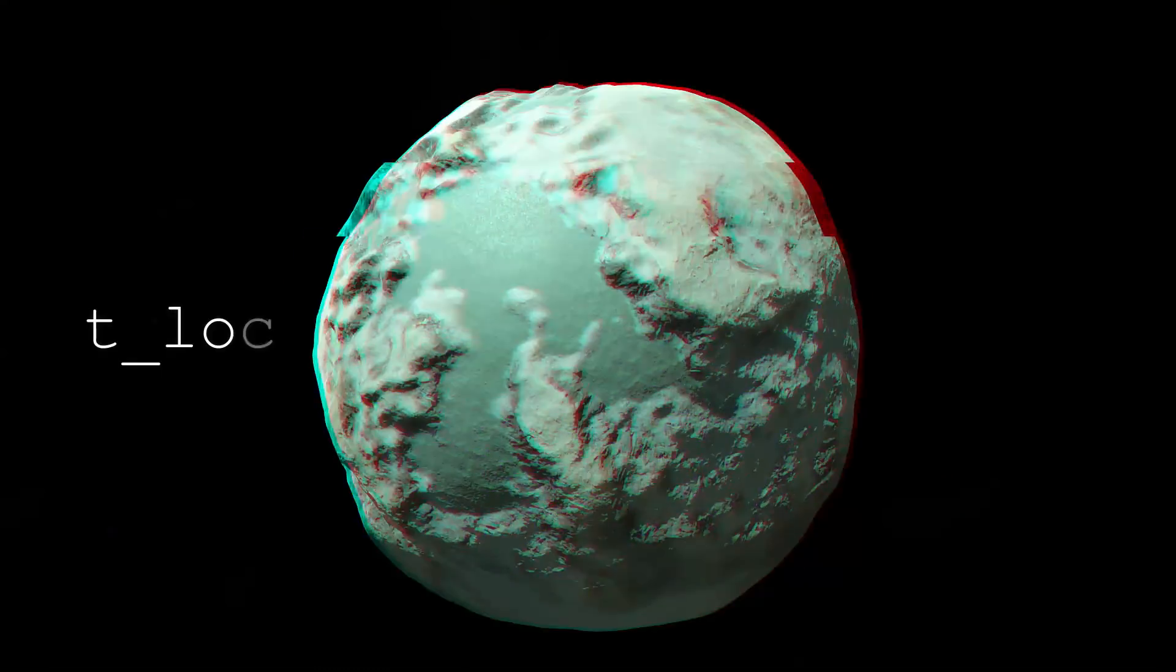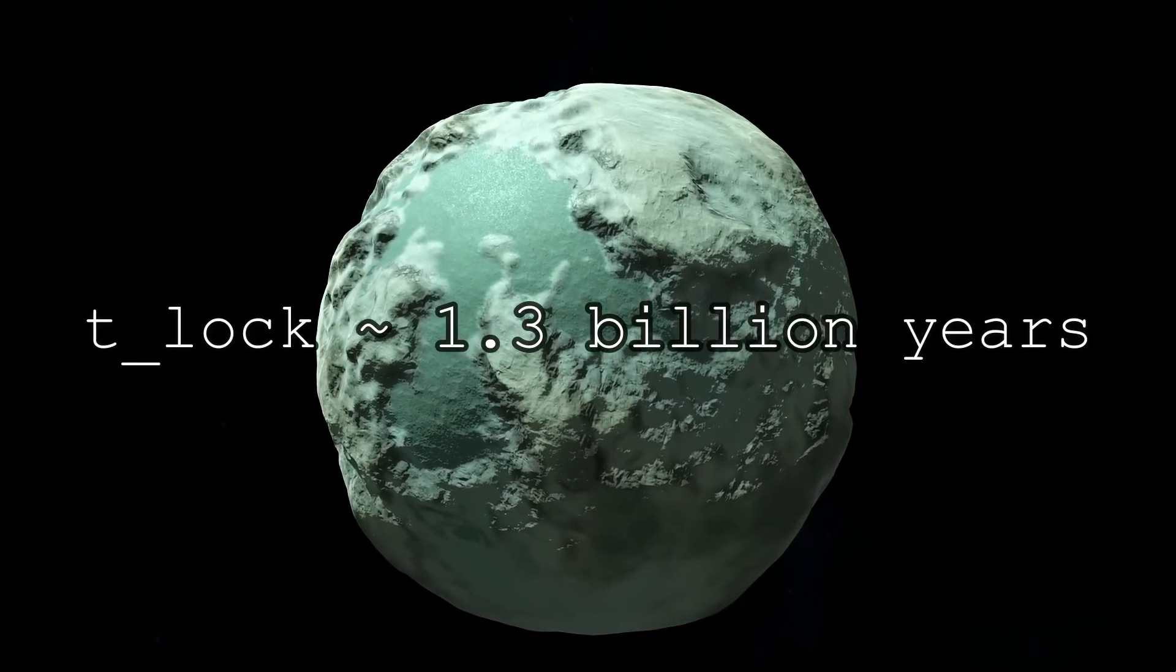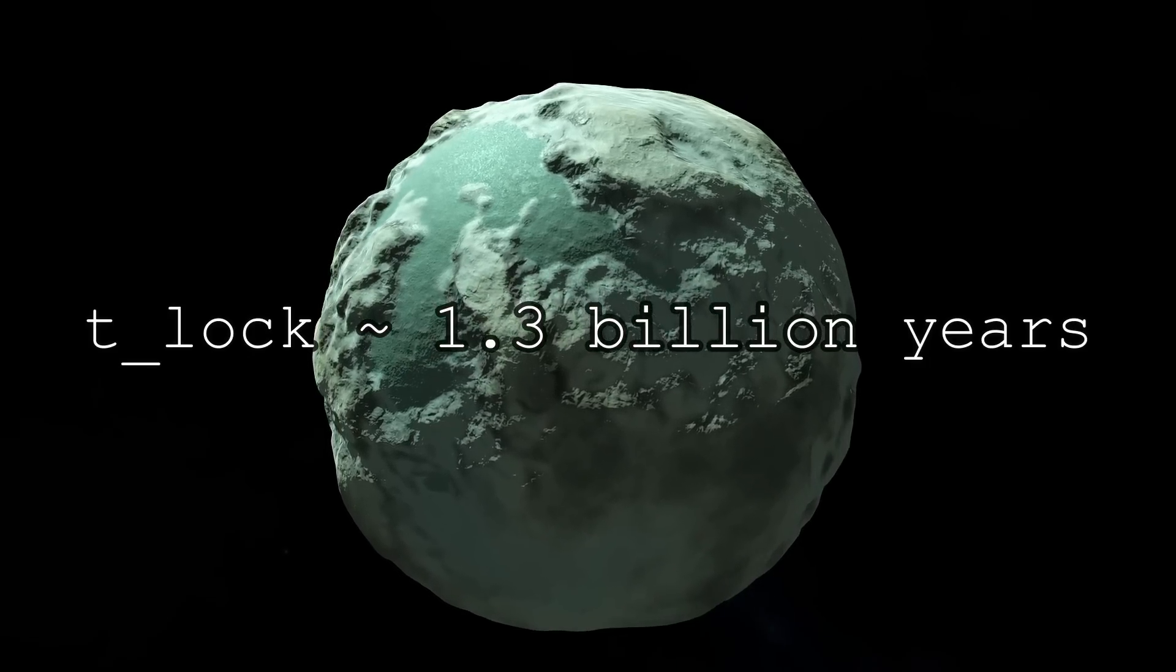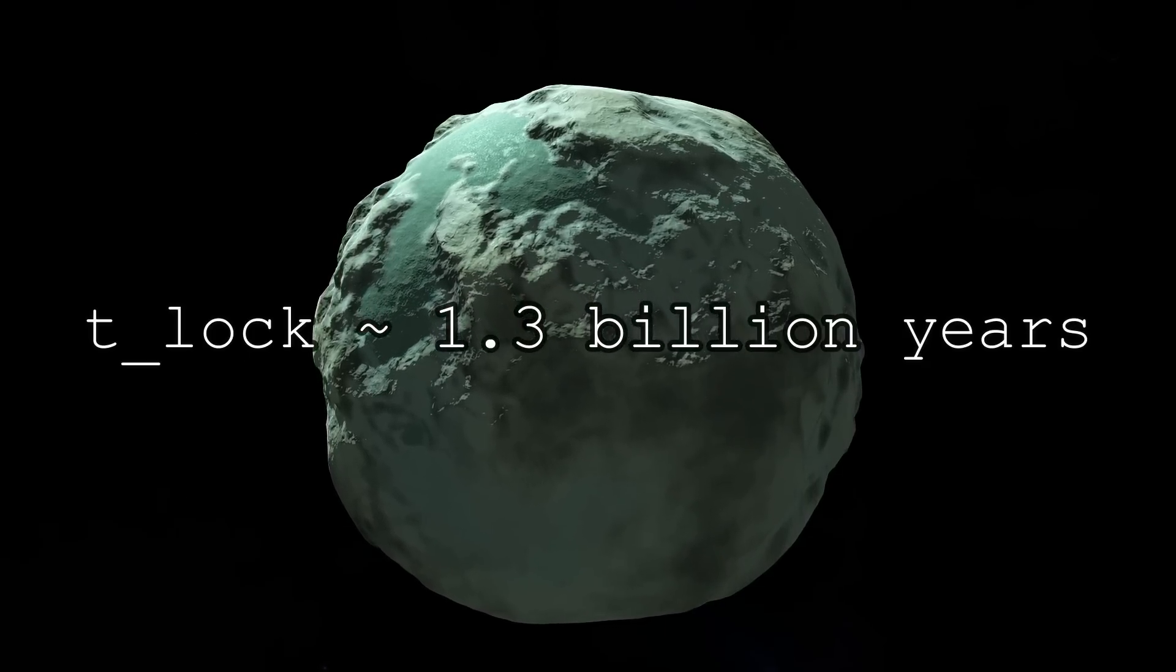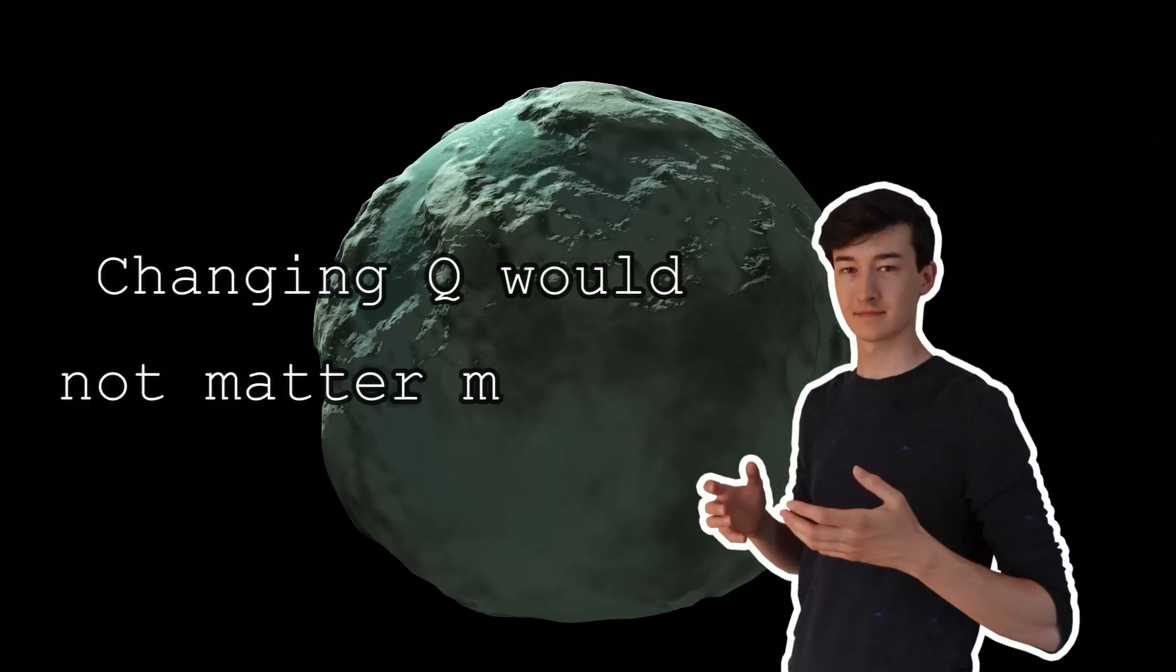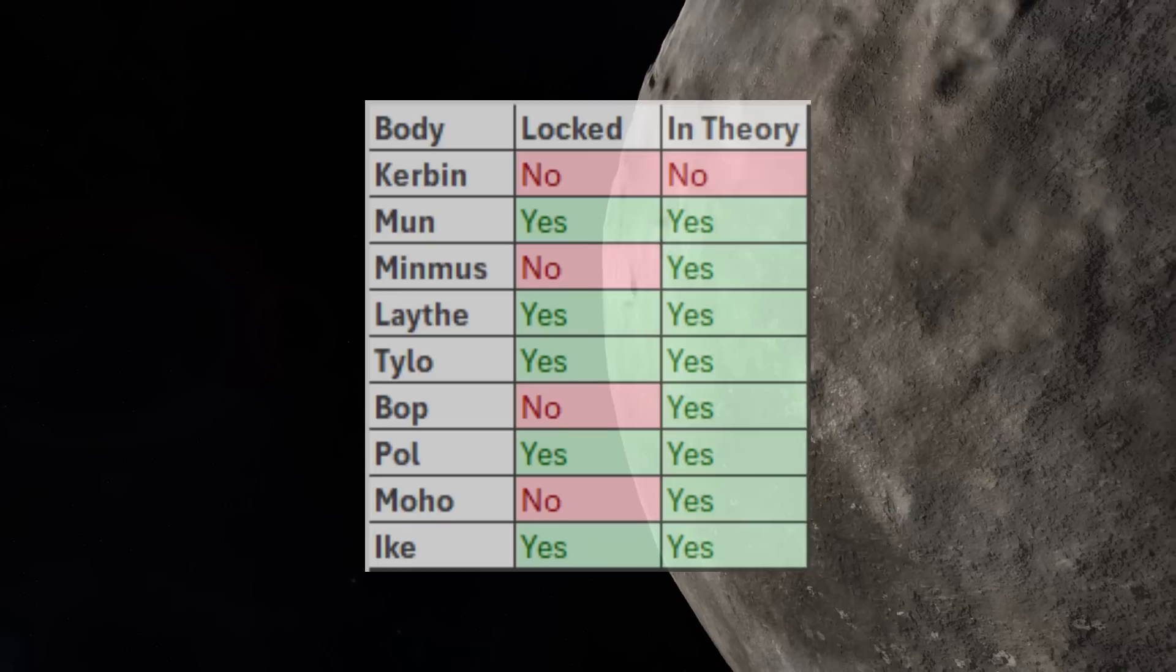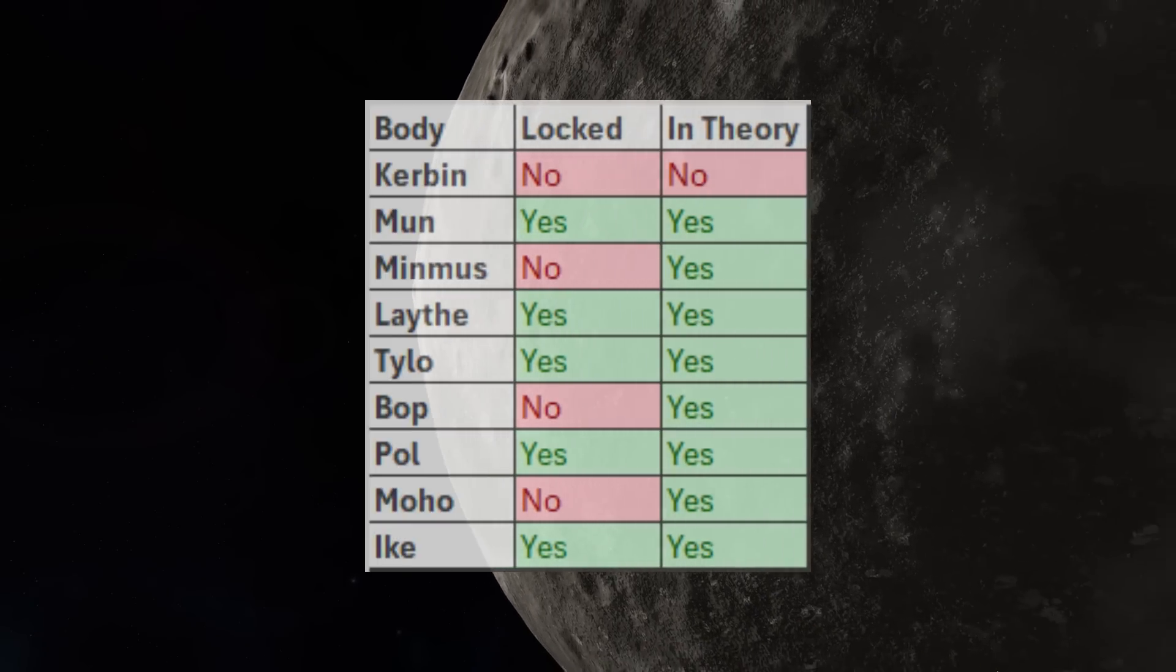And now we move on to Minmus, where I got a timescale of about 1.3 billion years. Which would mean that Minmus should probably be tidally locked. And even if the rigidity of the celestial bodies is that for regular planets, this would actually lower the timescale. So that would make Minmus only more likely to get tidally locked. And for various values of Q, it keeps within a reasonable range for it to be tidally locked as well. I also calculated the tidal locking timescales for some other bodies in KSP. And what I got was this.